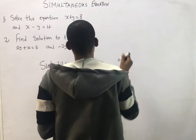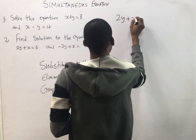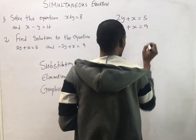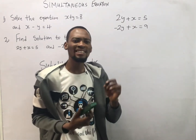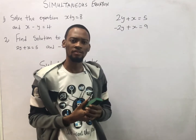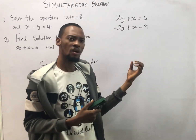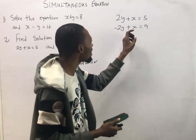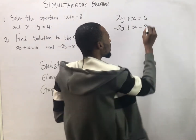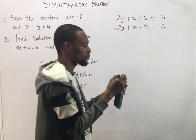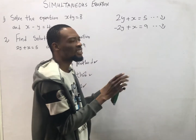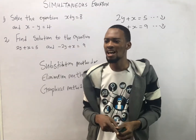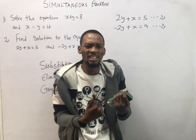Now let's look at this other equation: 2Y plus S equals 5 and minus 2Y plus S equals 9. We ask ourselves which unknown to eliminate first — do I want to eliminate S first or Y first? If I'm eliminating S, I'll say equation 1 minus equation 2. If I'm eliminating Y, I'll say equation 1 plus equation 2. There is no rule as to which to eliminate first — it's your choice and whichever you think is easier.